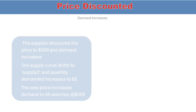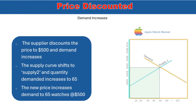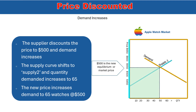Here we illustrate how a discounted price can increase demand. The movement along the demand curve from supply 1 price to supply 2 price shows the price drop. This creates a new level of interaction measured by the darker rectangle, where 65 watches are demanded at $500 each.